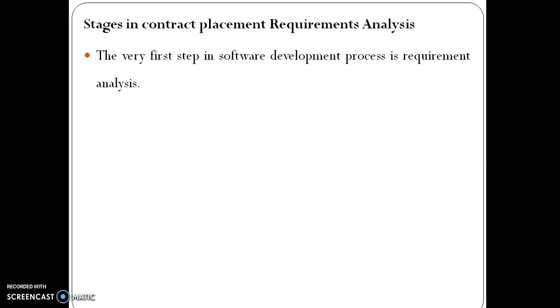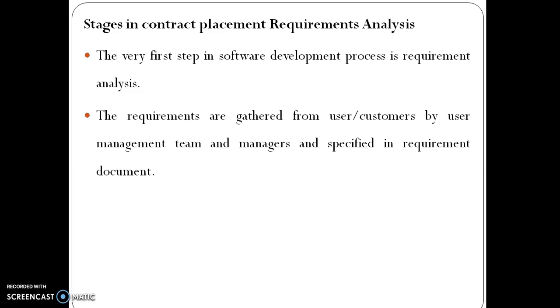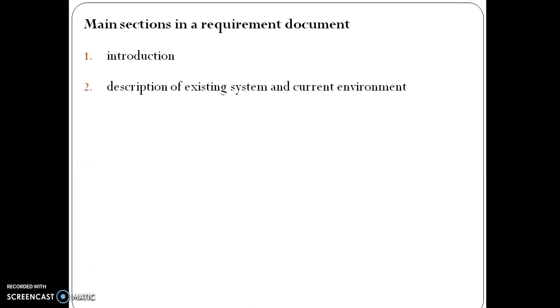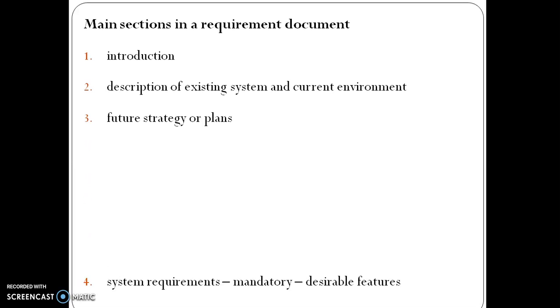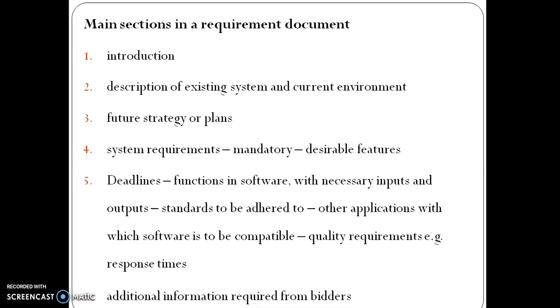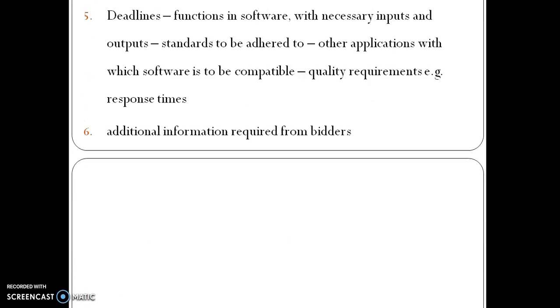Stages in contract placement — requirement analysis: the first step in the software development process. Requirements are gathered from users or customers by the management team and specified in requirement documentation. Main sections in a requirement document include: introduction, description of existing system and current environment, future strategy or plans, system requirements, mandatory and deferrable features, deadlines, and additional information required from bidders.